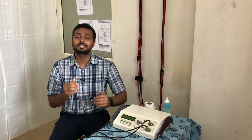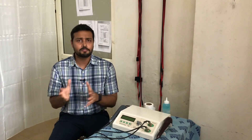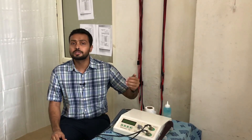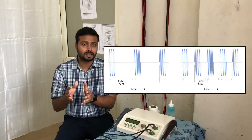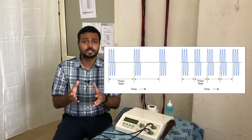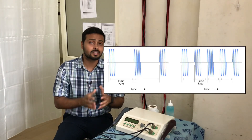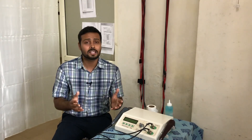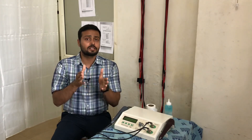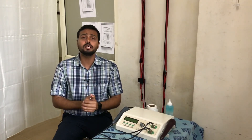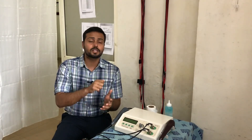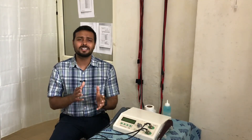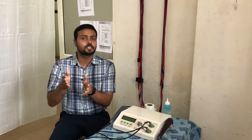There is also continuous ultrasound and pulsed ultrasound. Continuous means the waveforms are continuously given. Pulsed means there is a duty cycle — normally 20% is used, meaning ultrasonic waves are given 20% of the time and the remaining 80% is rest. For example, in a 10-second period with 20% duty cycle, waves are given for 2 seconds and there is an 8-second rest. The formula to calculate duty cycle is: on-time divided by on-time plus off-time.